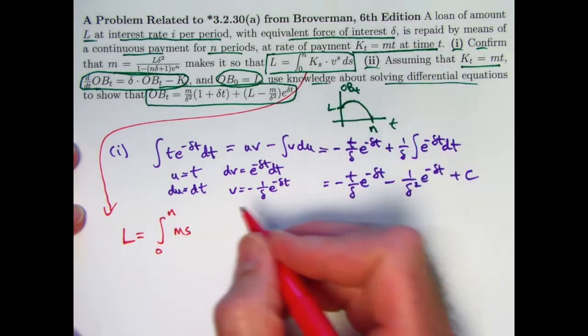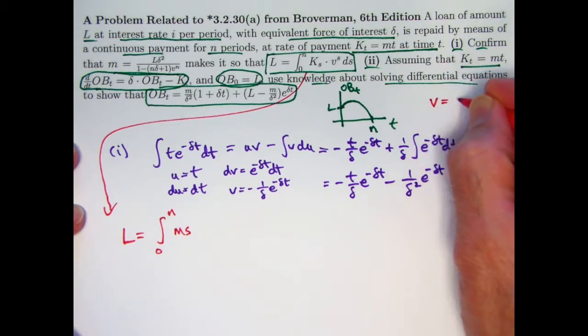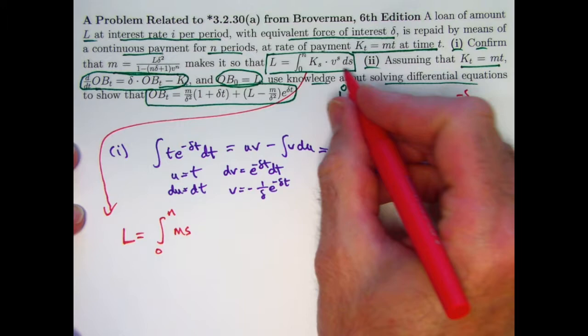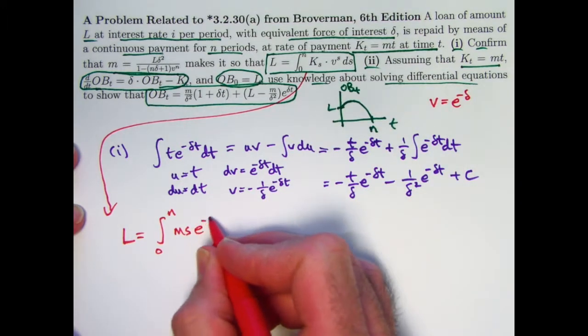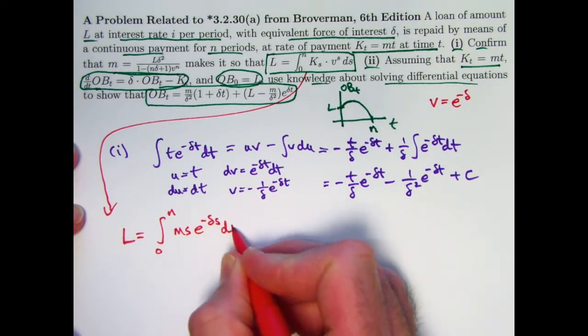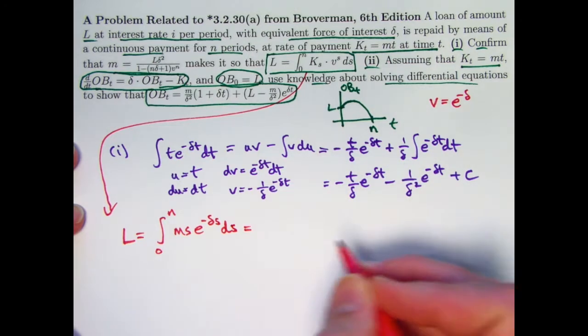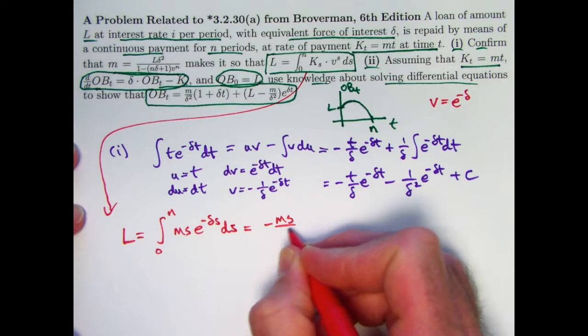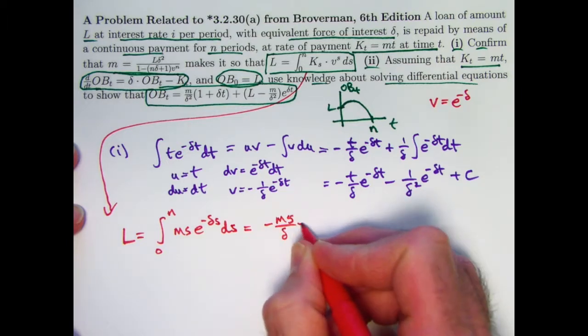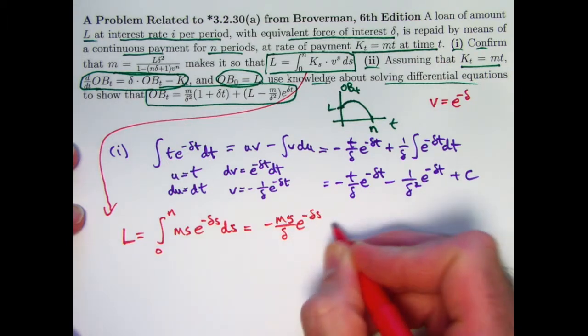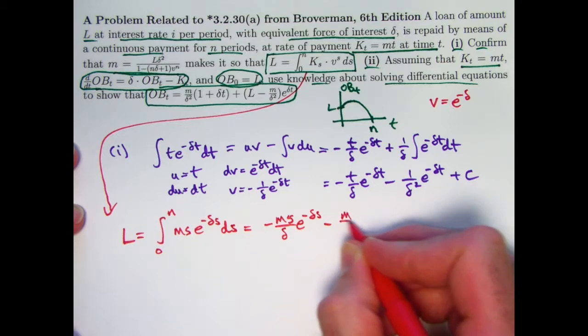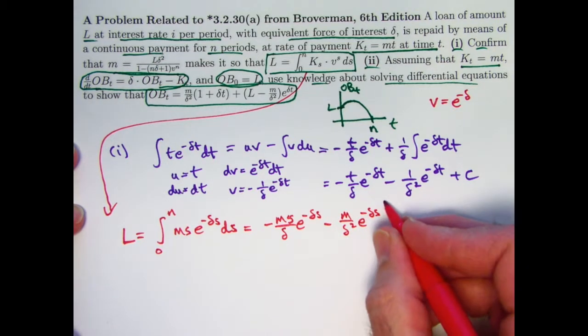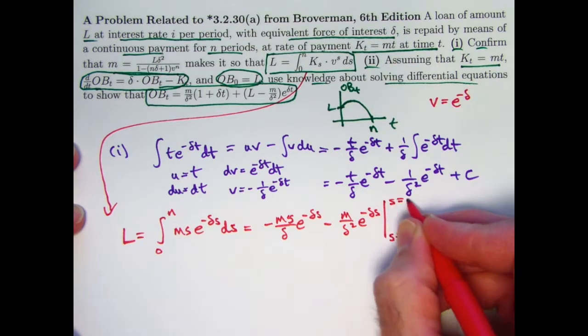KS is M times S. And VS, V is the present value discount factor. It's the same as E to the negative delta. So this becomes E to the negative delta times S. Using the antiderivative we just found and also multiplying by M, we get that this is M S over delta E to the negative delta S minus M over delta squared E to the negative delta S. We don't need the C. S goes from 0 to N.